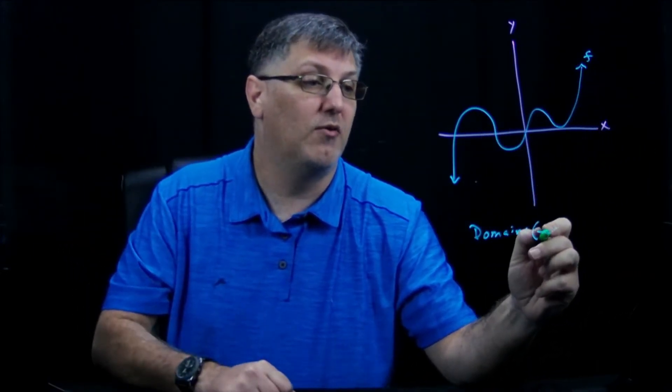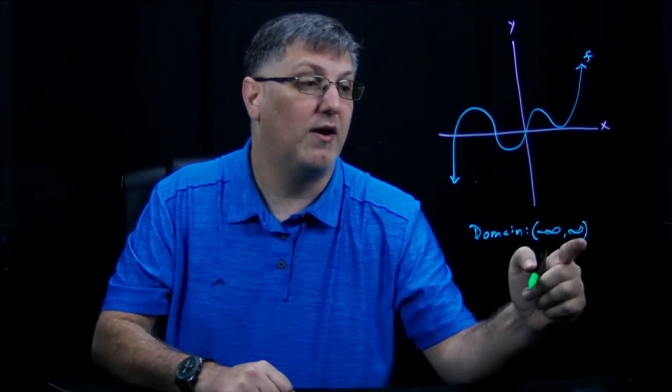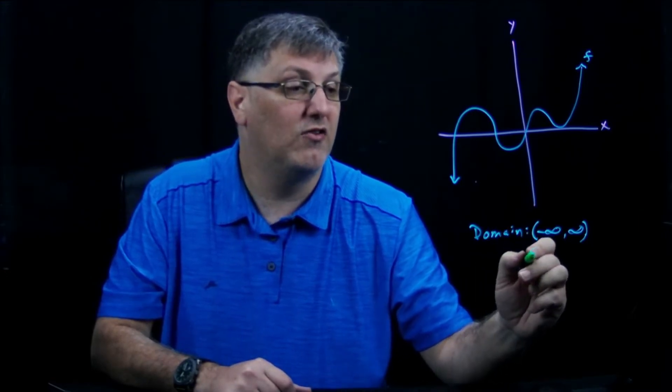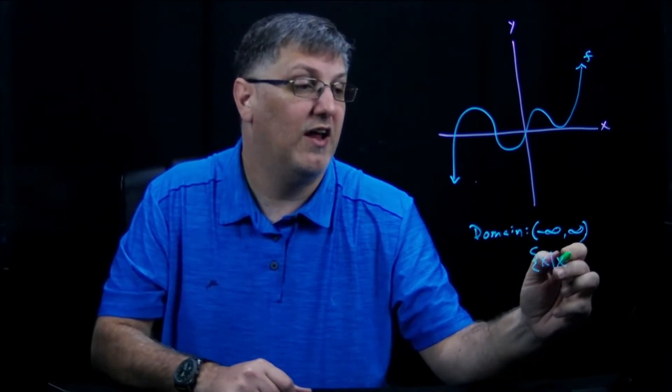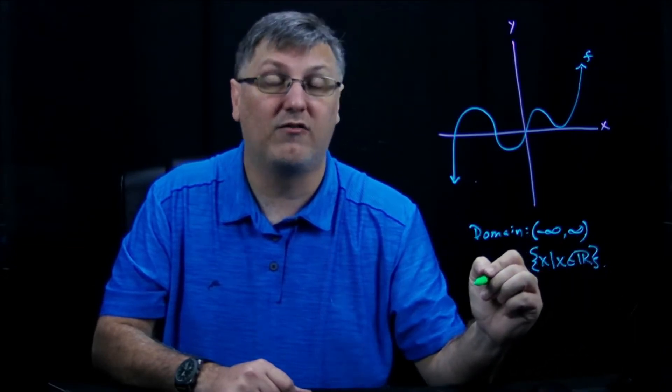So my domain is going to be from negative infinity to infinity, and of course we have our curve brackets because it cannot touch infinity. And if I wanted to write this in set notation, it would be the set of all x such that x is an element of the real numbers that includes all of my x values.